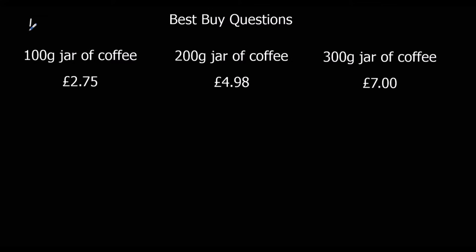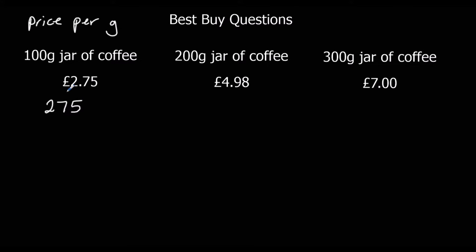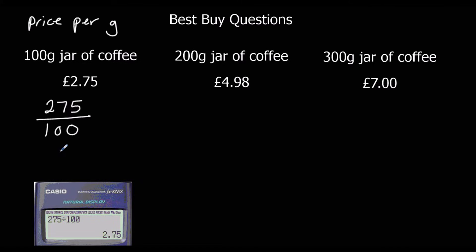So if we work out the price per gram of coffee — 'per' means divide — so it's the price divided by how many grams you've got. In this example I've got £2.75, and I'm going to do it in pence. So 275p divided by 100 gives us 2.75, so 2.7p per gram.